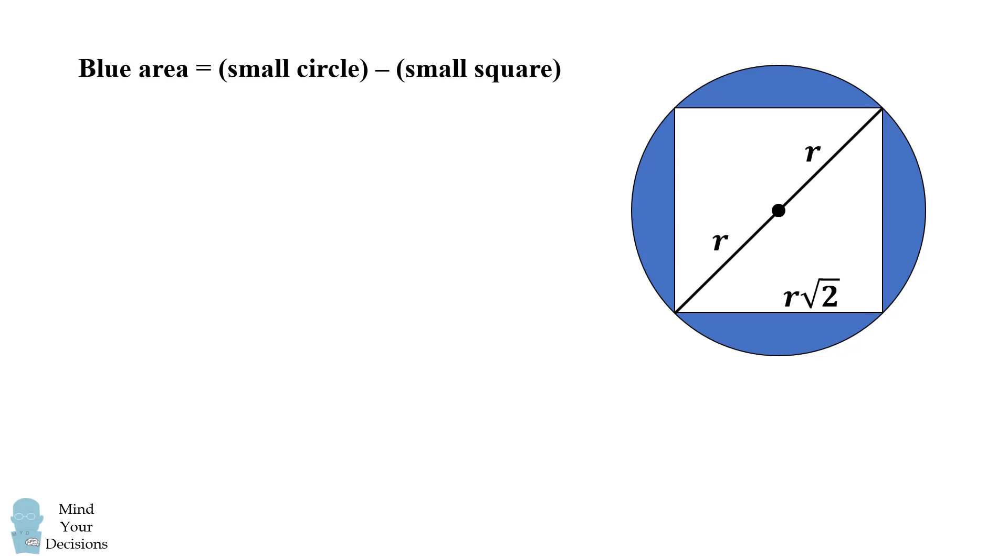The blue area equals the area of the small circle minus the area of the small square. This will be pi r squared minus the quantity r times the square root of 2 squared. This simplifies to be pi r squared minus 2r squared, which equals little r squared times the quantity pi minus 2.